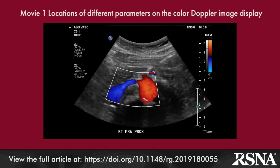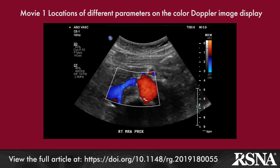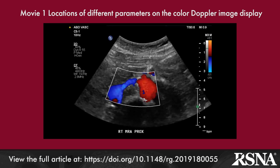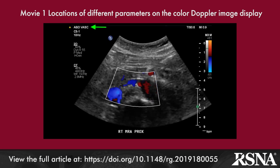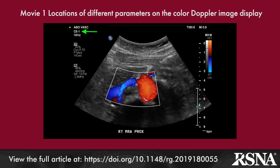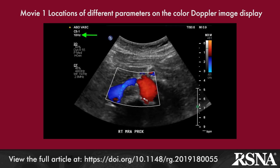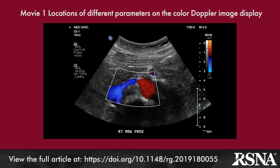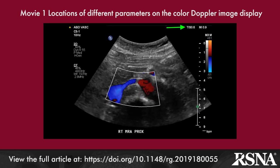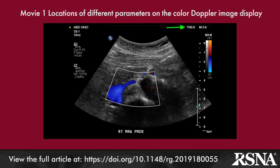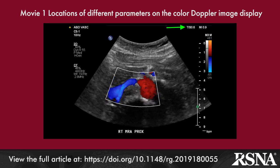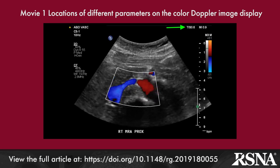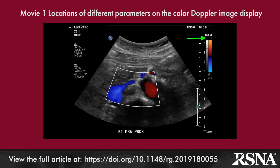Vascular Doppler parameters on color display: a color Doppler video of the main renal artery demonstrates different grayscale and Doppler settings that can be determined from the image. On the right upper corner there is a display of the chosen preset for the evaluation of abdominal musculature. Transducer choice and frame rate are listed below the application. On the left upper corner there is a display of the output power selected for the Doppler evaluation. Note that the output energy differs depending on the application utilized.